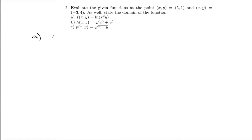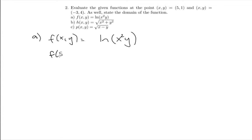The first one is f equal to the natural log of x squared times y. So first we'd like to evaluate this at (5, 1). The function at (5, 1) is found by replacing every x with 5 and every y with 1. So I have ln of 5 squared times 1.